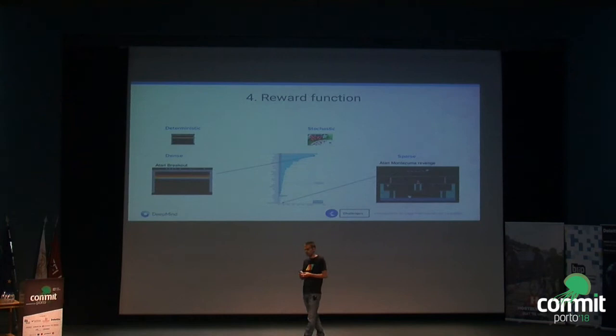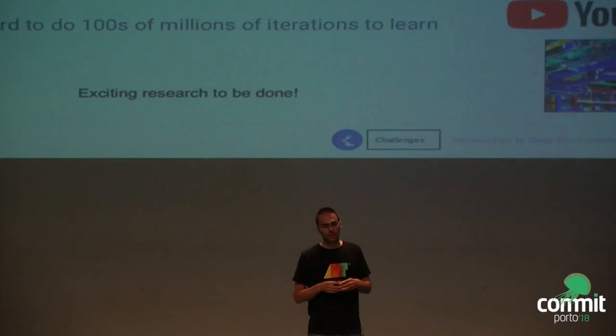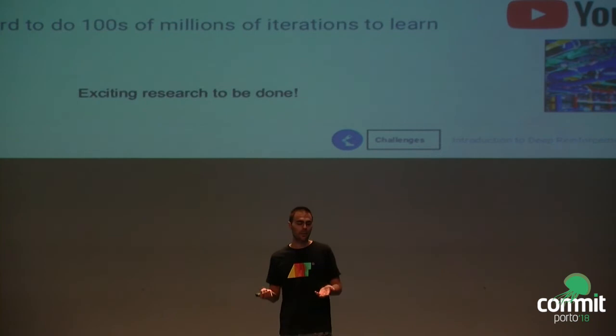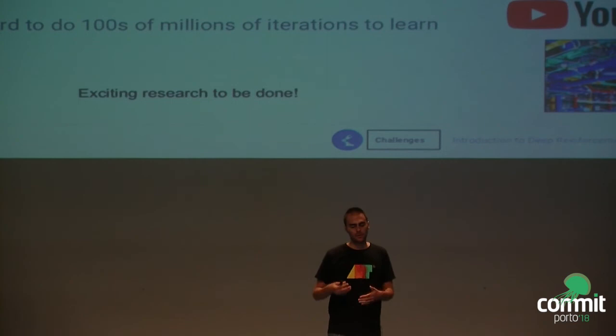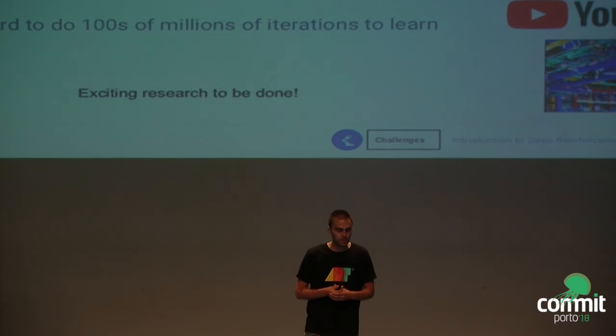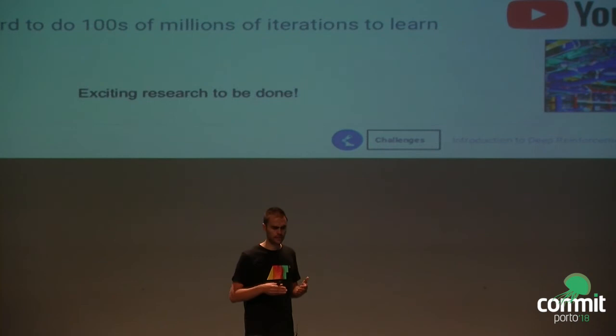In addition to these challenges that exist in simulated domains and games, if you want to bring RL or AI to the real world, things get even harder. You don't have a simulator; if you have to learn by interacting with the real world, you need to respect safety constraints and user experience — for example, you don't want to degrade someone's experience on a website. These algorithms also typically take a very long time to learn — in the Atari domain, tens or hundreds of millions of iterations. You cannot do this in real systems, it's too slow, so we need to be much more sample efficient.